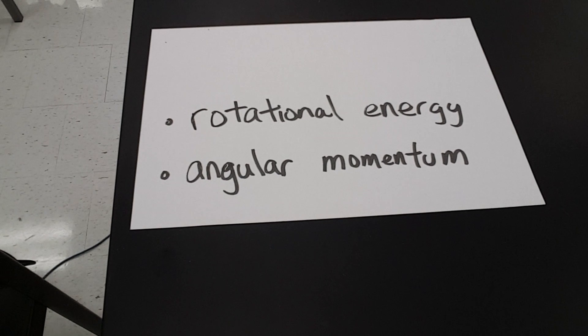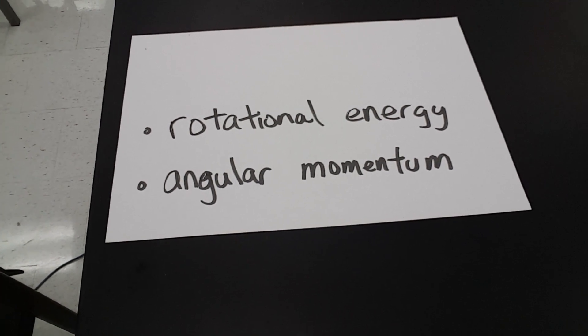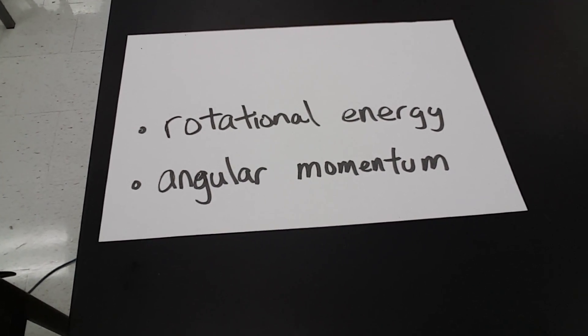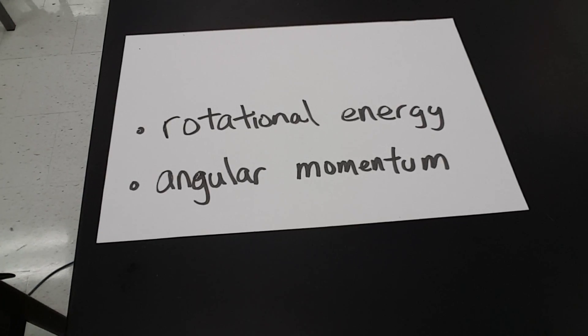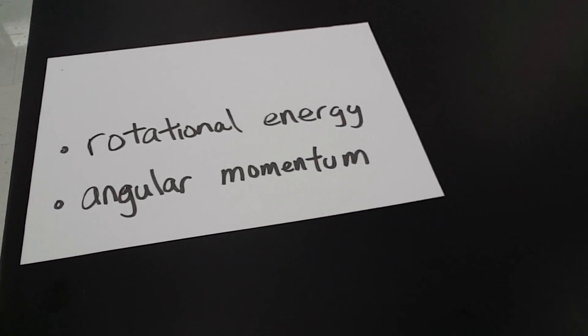You'll notice that as an object rolls not only is it moving horizontally it also contains rotational energy. Moreover it also has another property called angular momentum and that's a little bit too much for today's lab so we're going to simplify things down by quite a bit.